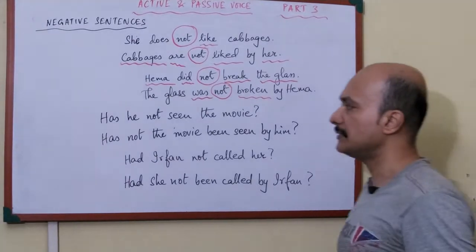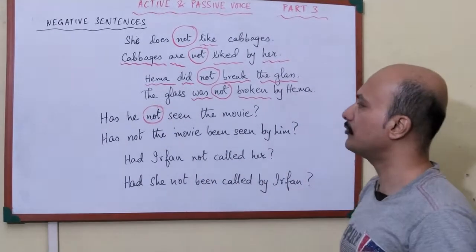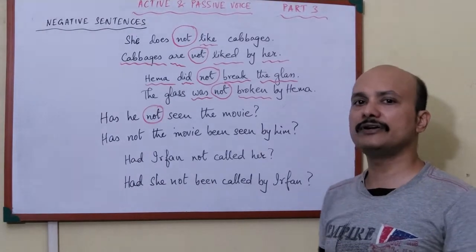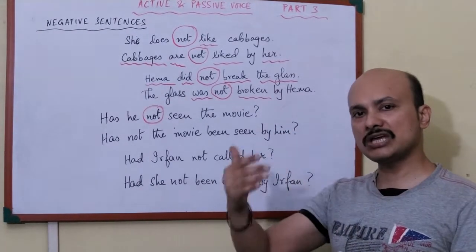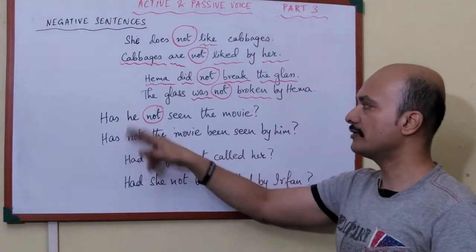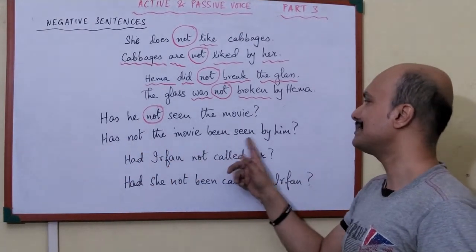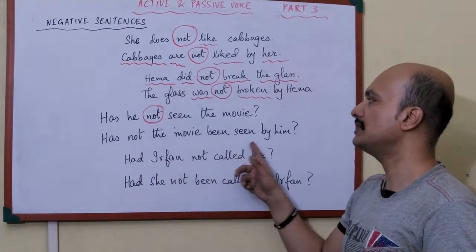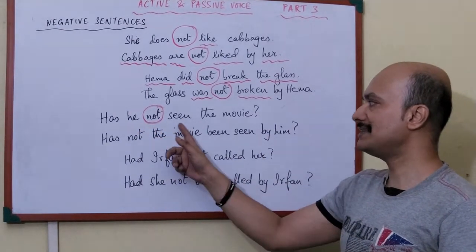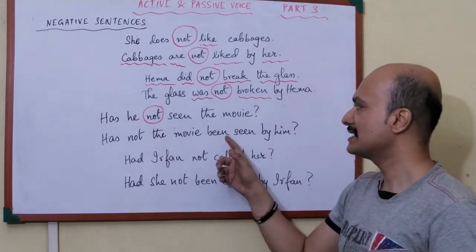Now I move on to questioning sentences. 'Has he not seen the movie?' Here 'not' is the negative word. You know how to change questioning sentences — if not, see my second video where I discuss step by step how to change question sentences from active to passive. Following those steps, 'has he not seen the movie?' becomes 'has not the movie been seen by him?' — 'he' becomes 'by him', 'the movie' goes to the front, and 'has seen' becomes 'has been seen' as per present perfect rules.